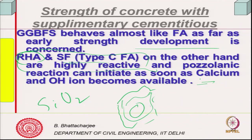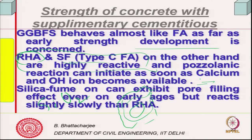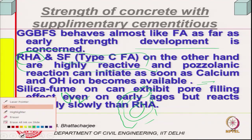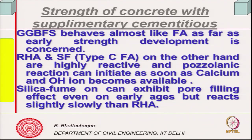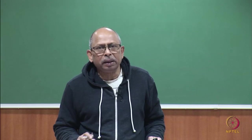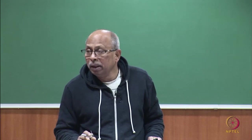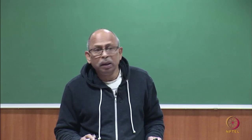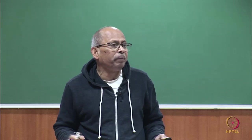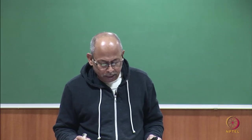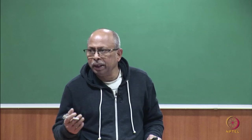Rice husk ash can show almost similar strength at the earliest age because of their pore-filling effect. However, rice husk ash has another problem: although they have large surface area due to their cellular structure, they consume a lot of water in the system — so they have issues related to workability and moldability.